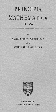Begriffschrift is a book on logic by Gottlob Frege, published in 1879, and the formal system set out in that book. Begriffschrift is usually translated as 'concept writing' or 'concept notation'; the full title of the book identifies it as 'a formula language, modelled on that of arithmetic, of pure thought.' Frege's motivation for developing his formal approach to logic resembled Leibniz's motivation for his calculus ratiocinator.